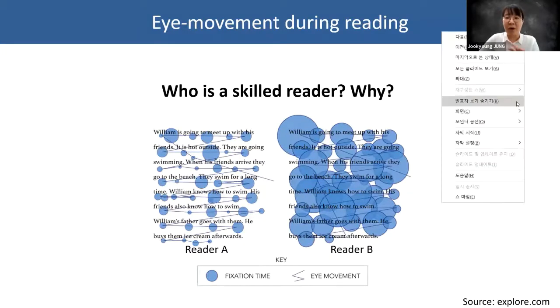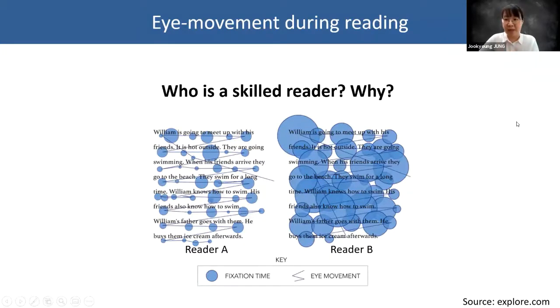So now that you have been introduced to some basic information about eye tracking technology, let me ask you this question. Here you see two different reading behaviors for the same text. Let me call the left one Reader A and the right one Reader B. What can you tell about Reader A and Reader B? This time, you don't have to type longer. Just type A or B. Who is a more skilled reader?